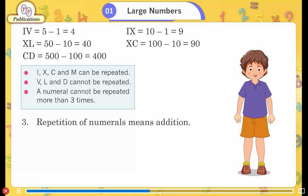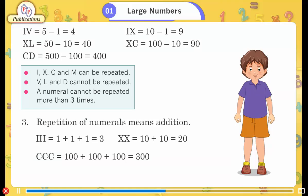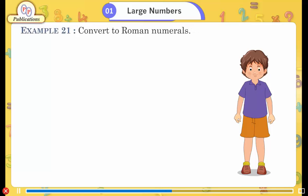Rule 3: Repetition of numerals means addition — III = 1 + 1 + 1 = 3; XX = 10 + 10 = 20; CCC = 100 + 100 + 100 = 300.